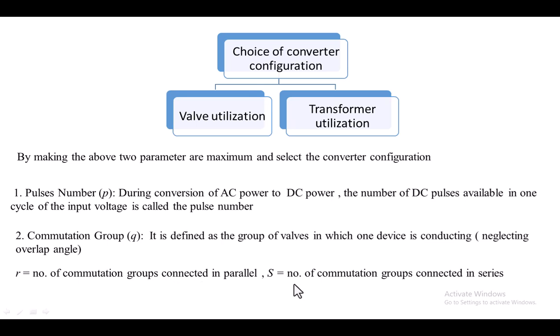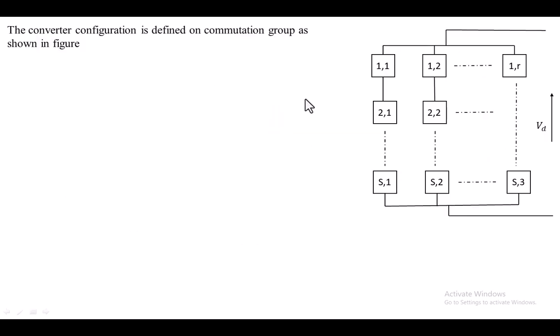Small r is the number of commutation groups connected in parallel. Small s is the number of commutation groups connected in series. In the converter configuration, one commutation group may consist of one, two, or three valves. The number of valves connected in series represents s, and the number connected in parallel represents r.